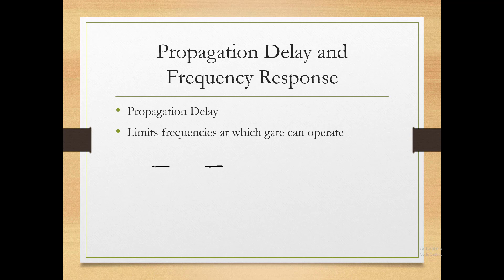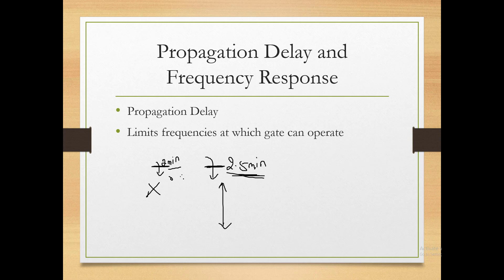An analogy: like a bank with two teller stations — one processes a bill every 2 minutes, another every 2.5 minutes. The propagation delay of the first is 2 minutes, and of the second is 2.5 minutes. After an hour, the first station's queue is clear but the second still has a backlog. Their respective frequencies are 1/2 and 1/2.5 — so the one with shorter propagation delay has higher frequency.